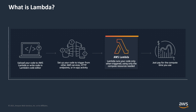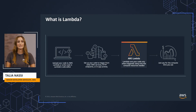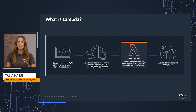AWS Lambda is a serverless compute service that lets you run code without provisioning or managing servers. All you do is upload your business logic code to Lambda or write code in Lambda's code editor. Then you set up your code to trigger from other AWS resources. Lambda then runs your code only when triggered, using only the compute resources needed, and you just pay for the compute time that you use.